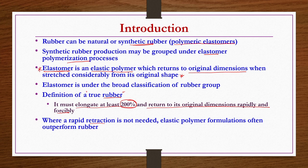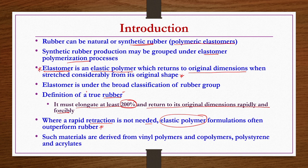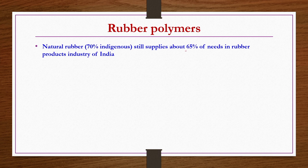Where rapid retraction is not needed, elastic polymer formulations often outperform natural rubbers. Such materials are derived from vinyl polymers, vinyl copolymers, polystyrenes, and acrylites. Natural rubber still supplies about 65 percent of needs in the rubber products industry in India, out of which 70 percent is indigenous.